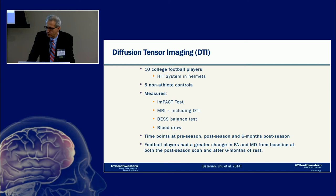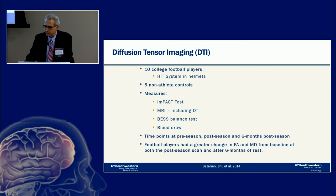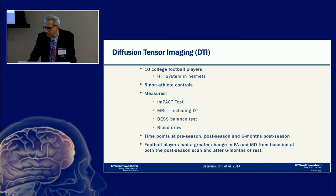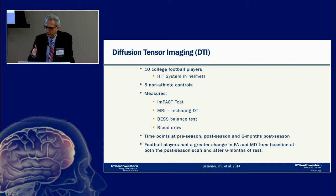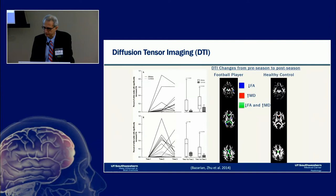A diffusion tensor imaging study by Bazarian et al. examined 10 college football players using the HIT helmet-embedded sensor system and 5 non-athlete controls. Measures included ImPACT testing, DTI-MRI, balance testing, and blood draws, with pre-season, post-season, and a six-month post-season follow-up. Football players had greater change in fractional anisotropy — a measure of white matter integrity — and mean diffusivity from baseline at both the post-season scan and after six months of rest, with FA not quite returning to normal.